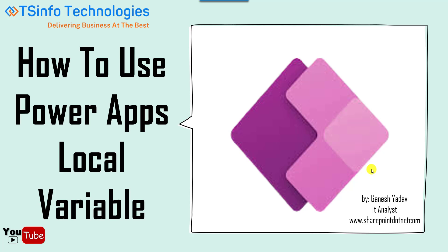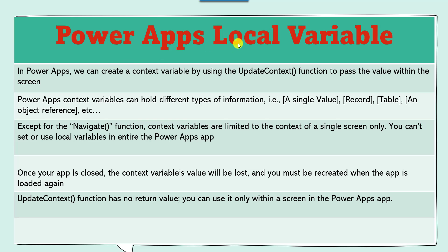Let me explain first of all what is a PowerApps local variable. In PowerApps we can create a context variable by using the updateContext function to store the value within the screen. A PowerApps context variable can hold different types of information like a single value, record, table, or an object reference.